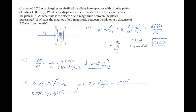When we substitute all of the values and calculate, we find the magnetic field magnitude there is 1.29 times 10 to the minus 6 tesla — 1.29 microtesla.